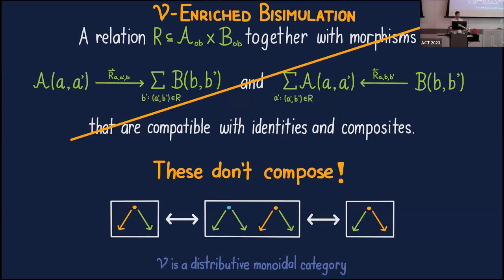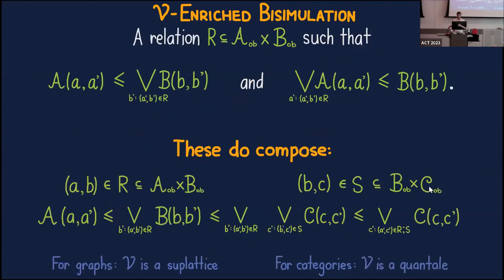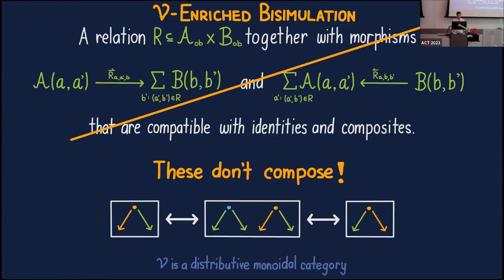In a longer talk I could have told you about enriched symmetric lenses, but here the solution is to restrict attention from arbitrary distributive monoidal categories to thin categories. For enriched graphs the appropriate base of enrichment is sub-lattices; for enriched categories it's quantales. The definition is essentially the same as before, except because we're in thin categories the co-product becomes just a supremum, and the compatibility conditions with identities and composites automatically hold — I don't need to impose them.